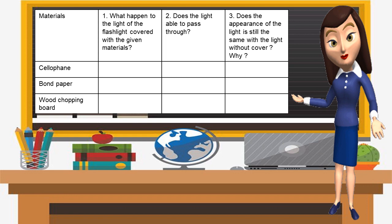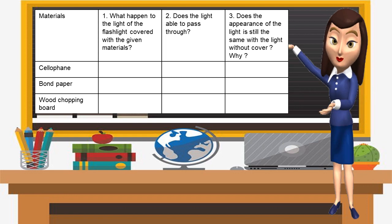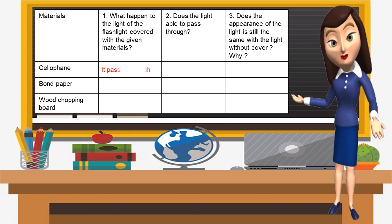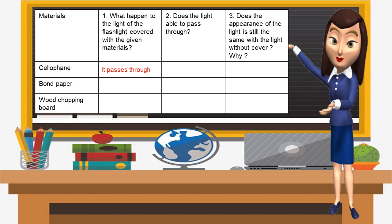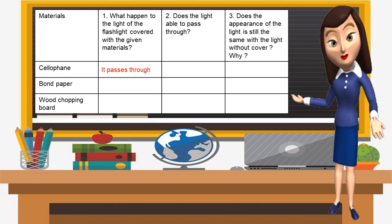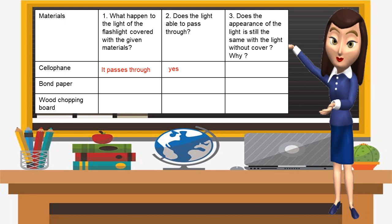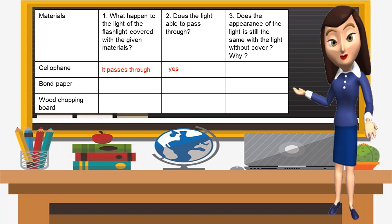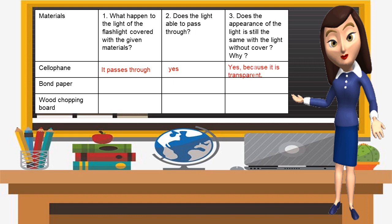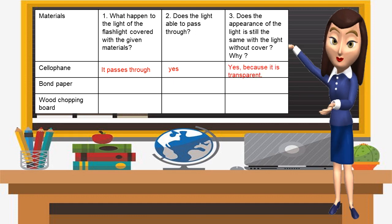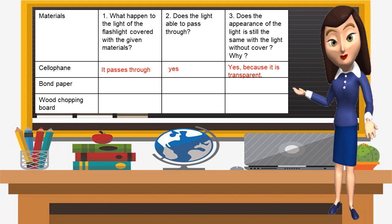Based on your observation, what happened to the light of the flashlight covered with cellophane? It passes through. Does the light able to pass through? Yes. Does the appearance of the light look the same as the light without cover? Yes, because it is transparent. Cellophane is transparent.